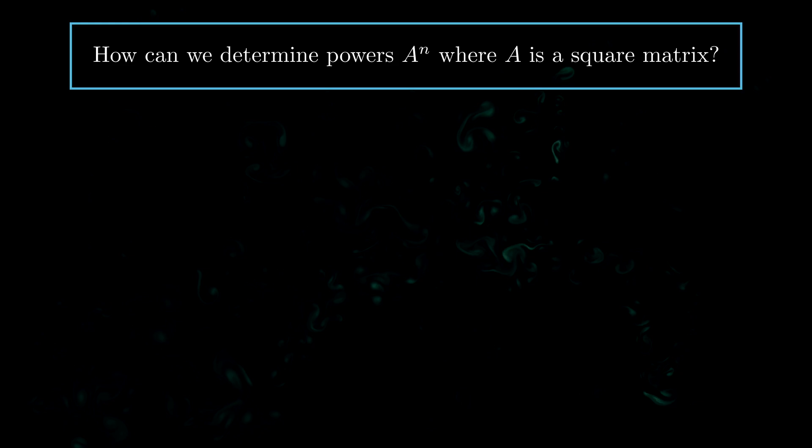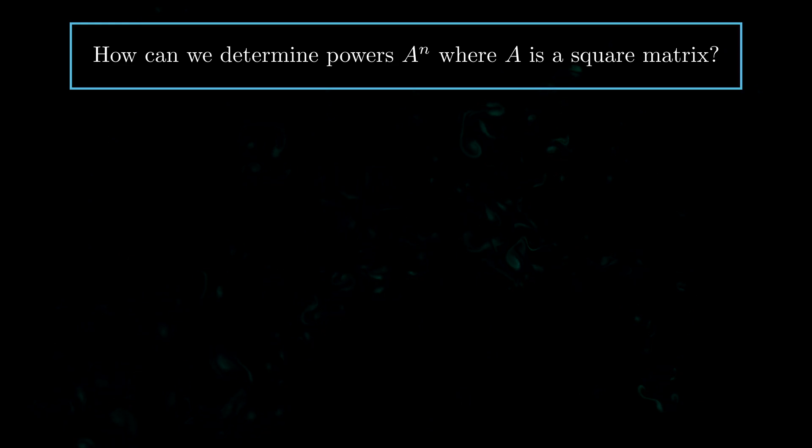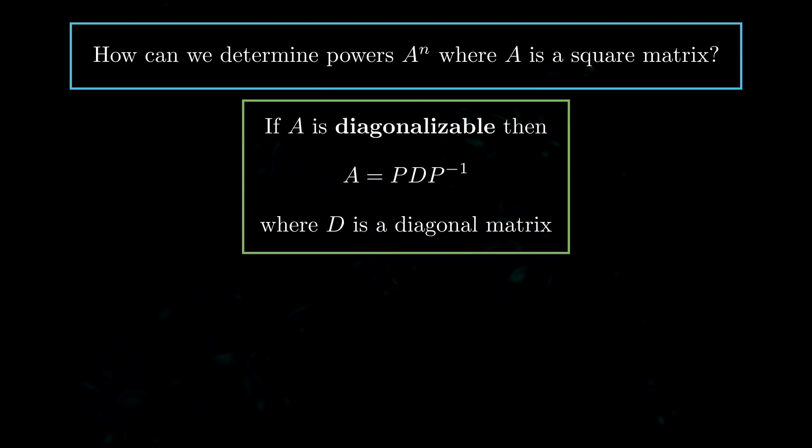So this just raises a new problem namely the problem of how do we actually determine high powers of a matrix. If we multiply a matrix over and over and over and let's say we multiply it n times is there some effective way of actually computing what that matrix will be? Well we do actually have a very nice method and this is all got to do with diagonalization.